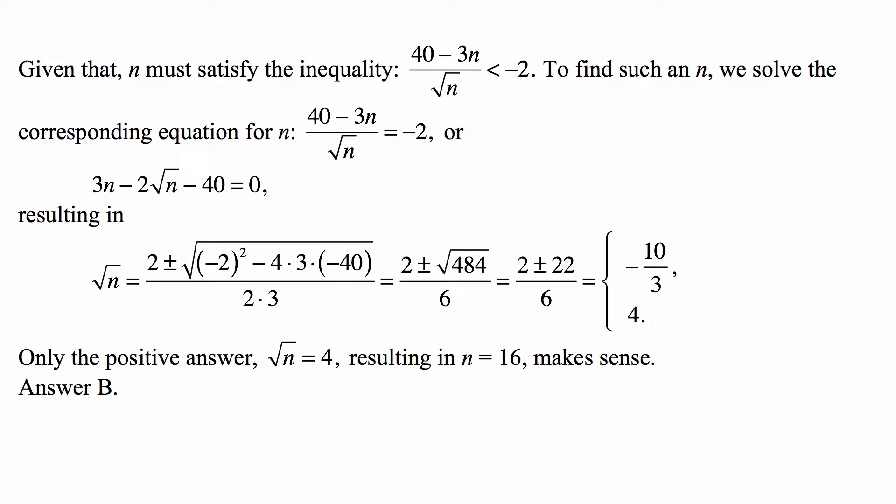So we try to work this out by solving for n, and we just solve the corresponding equation for n. (40 - 3n) / √n = -2, or 3n - 2√n - 40 = 0.